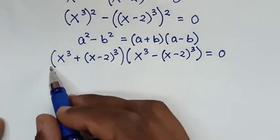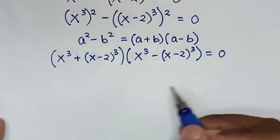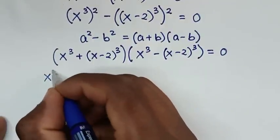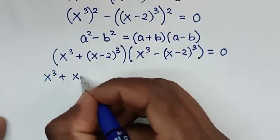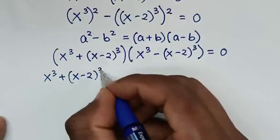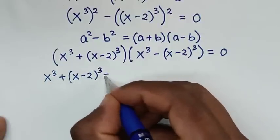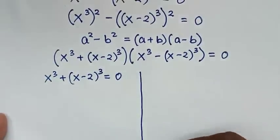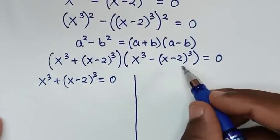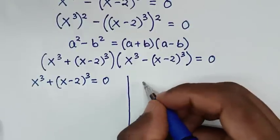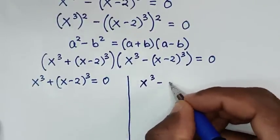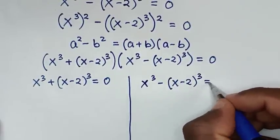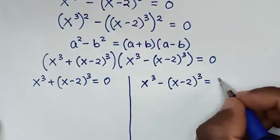From here we have two solutions. The first solution is x to the power of 3 plus x minus 2 bracket to the power of 3 equals 0. The second solution is x to the power of 3 minus x minus 2 bracket to the power of 3 equals 0.